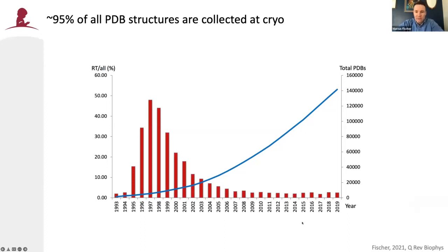As most of us know firsthand, crystallographic data are almost exclusively nowadays collected at cryogenic temperatures of around 100 Kelvin. The reasons for that are deeply rooted within our community and can be practical in nature — just to ease handling and storage of crystals — or experimental, to trap catalytic intermediates. But most importantly, as Elspeth related to us in the last talk, it is to mitigate radiation damage.